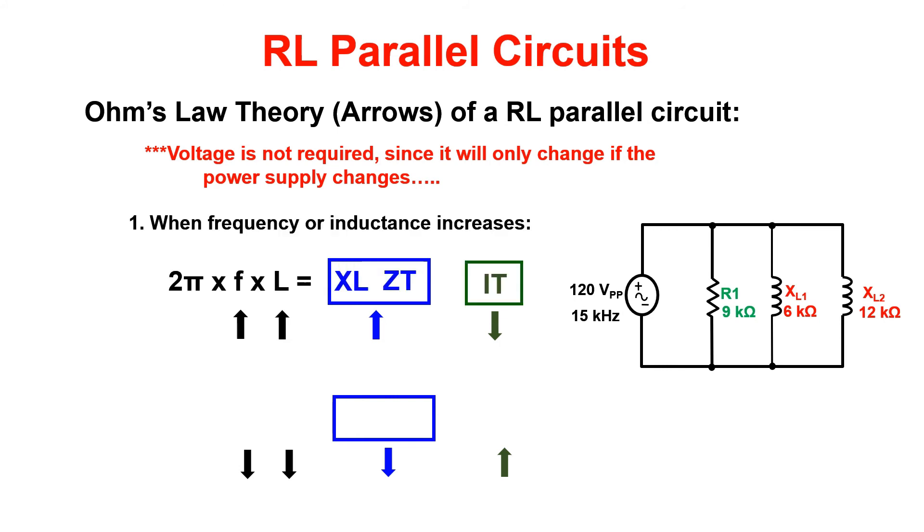If frequency or inductance goes up, XL and ZT will go up and IT will go down. If frequency or inductance goes down, XL and ZT will go down and IT will go up.